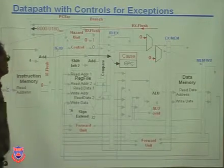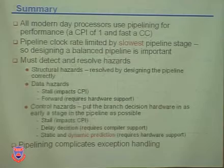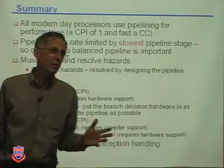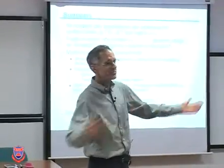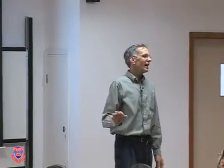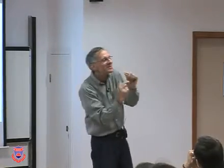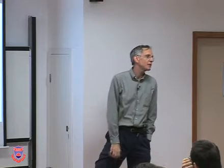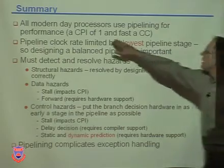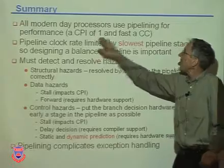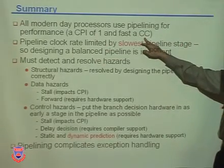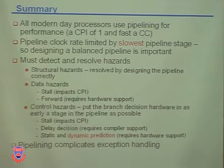Now let's summarize all of chapter four. These are the main points — the bare minimum from chapter four. First: all modern processors use pipelining. What does pipelining give us? A CPI of one, just like single cycle, but with a fast clock cycle — not a slow one.